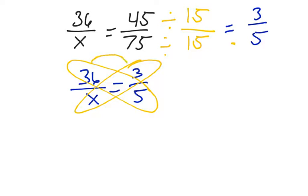You can also say, well, how do I get from 3 to 36? I can multiply that same number. So again, there are different ways we can solve the same problem. I'm going to use cross products in this case. So we have 3 times X, which is 3X, and we have 36 times 5.